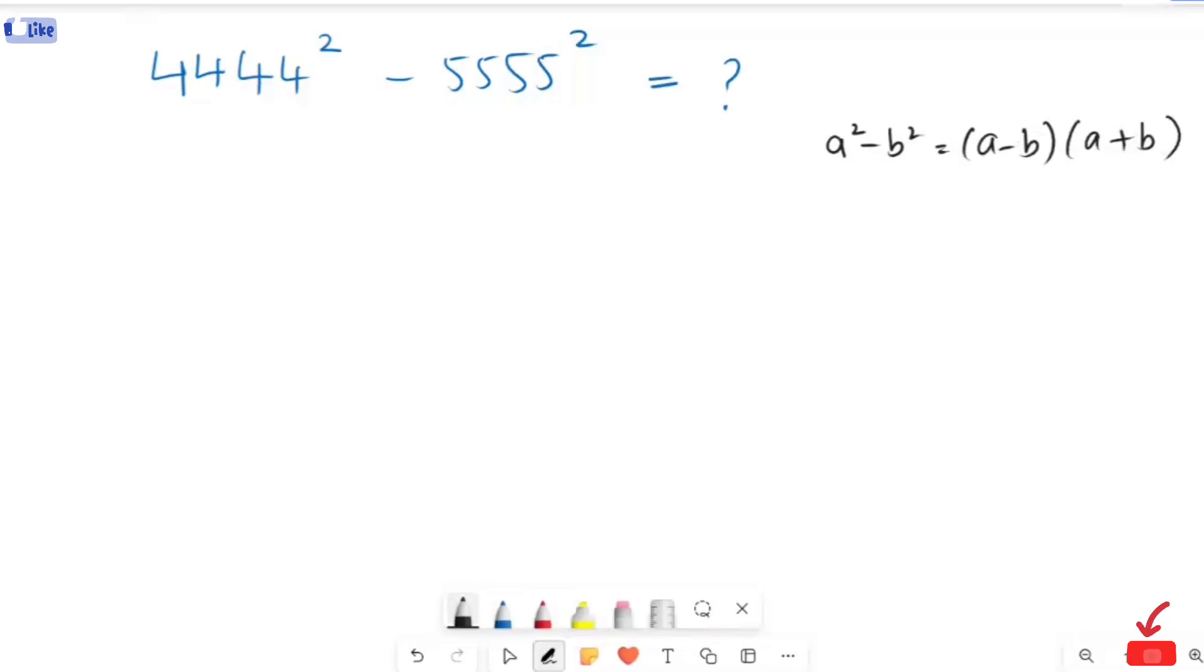Now, by using this algebraic identity, I'm going to write the next expression: (4444 plus 5555)(4444 minus 5555).